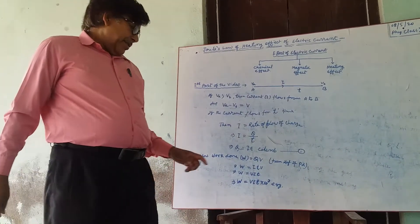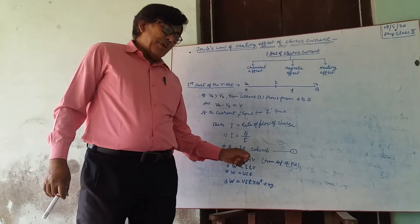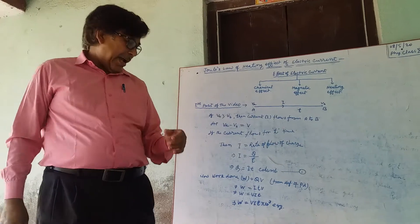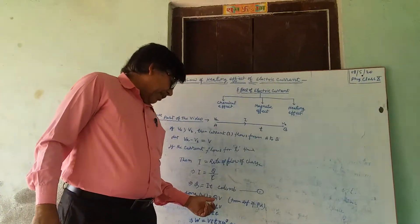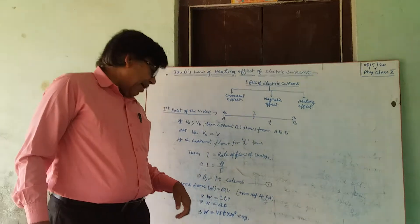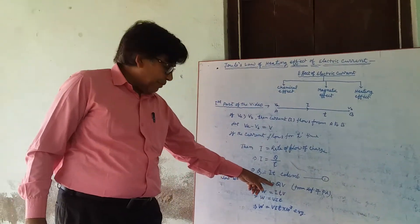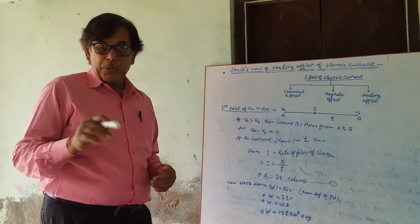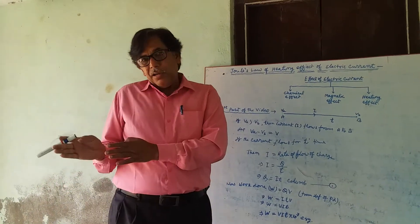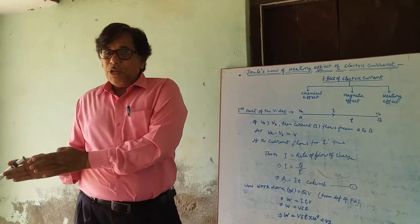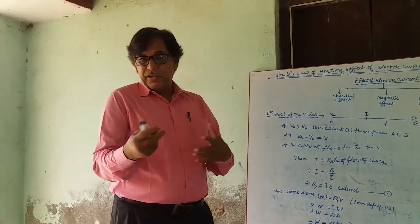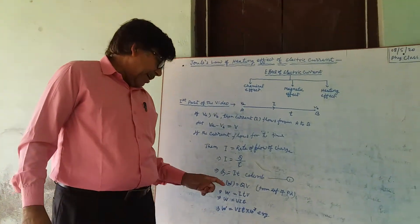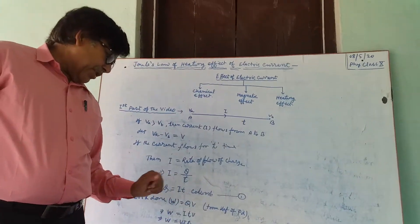Now, work done W equals QV. From the definition of potential difference, we know that work done equals QV. Work done to bring a unit positive charge from one point to another is called potential difference. From this definition, we get W equals QV.